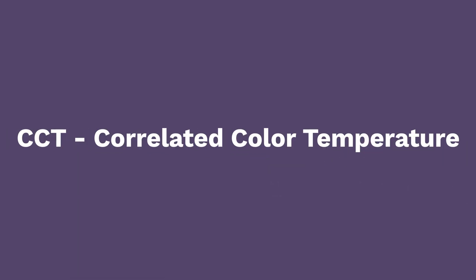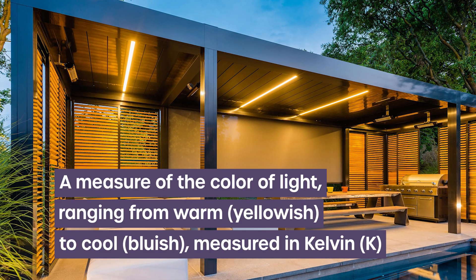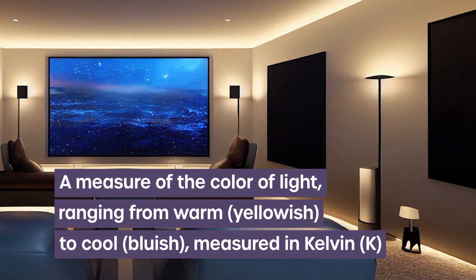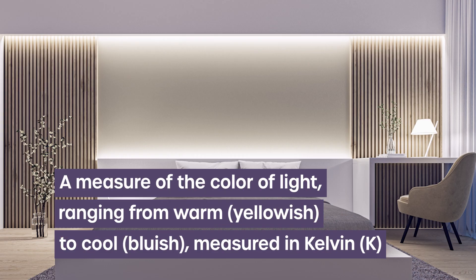CCT, correlated color temperature — a measure of the color of light ranging from warm, yellowish, to cool, bluish, measured in Kelvin (K).